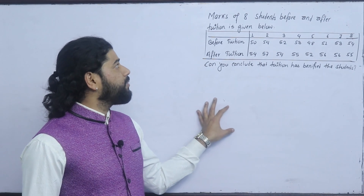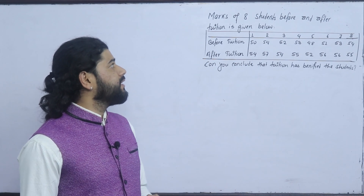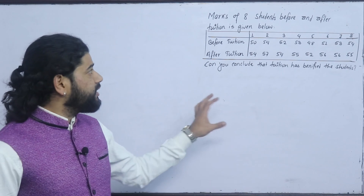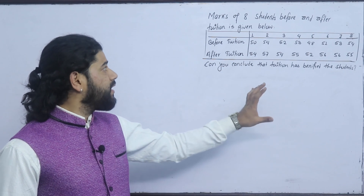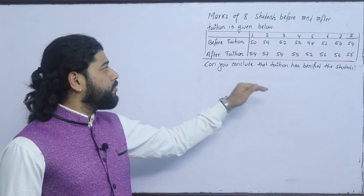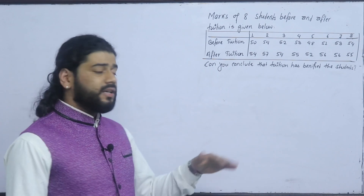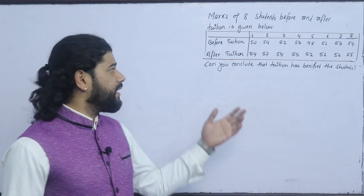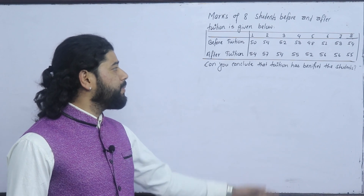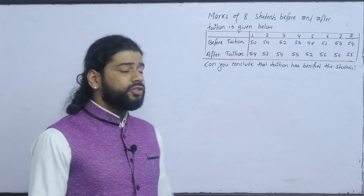This question is: Marks of 8 students before and after tuition is given below. Students 1, 2, 3, 4, 5, 6, 7, 8. Before tuition marks: 50, 54, 52, 53, 48, 58. After tuition marks: 54, 57, 54, 55. Can you conclude that tuition has benefited the student?